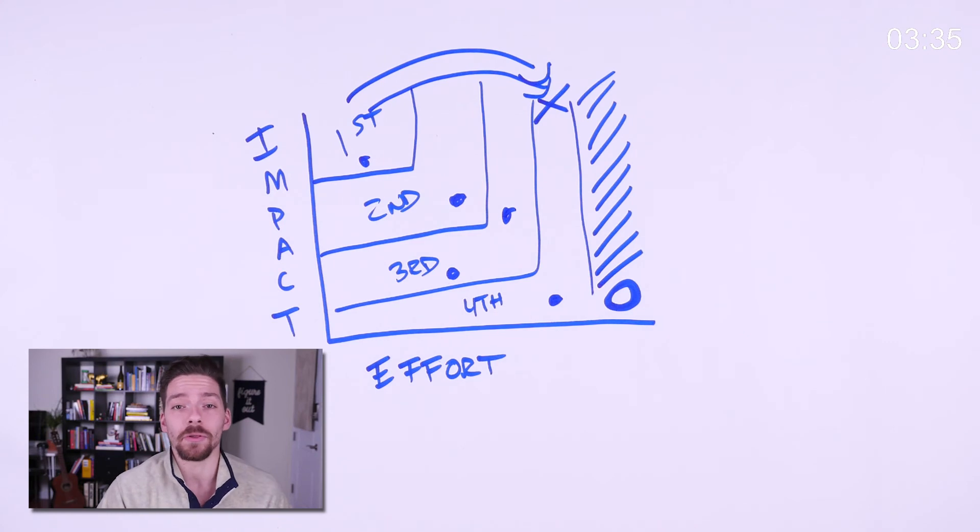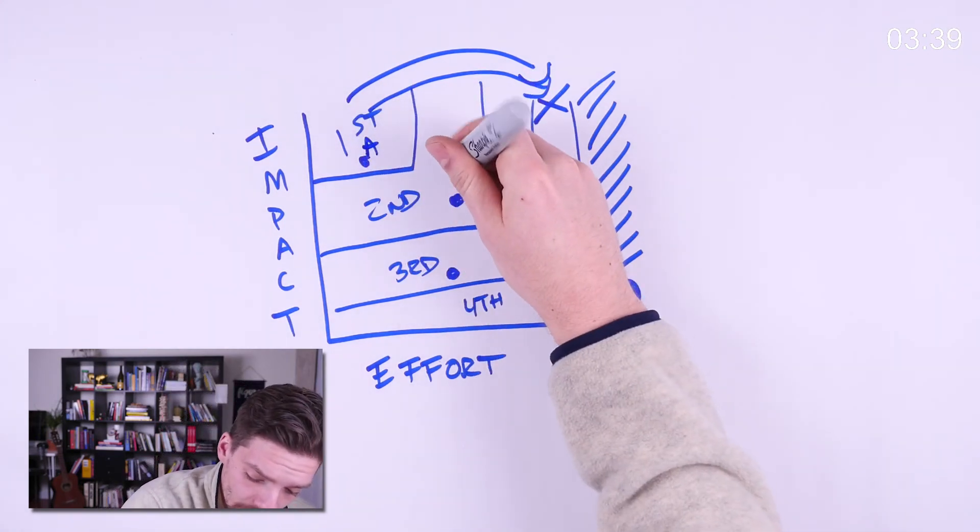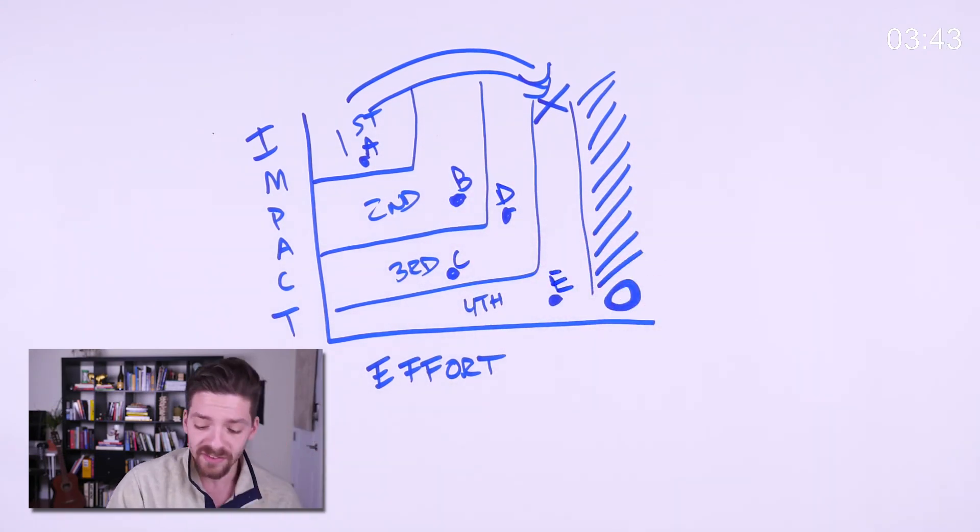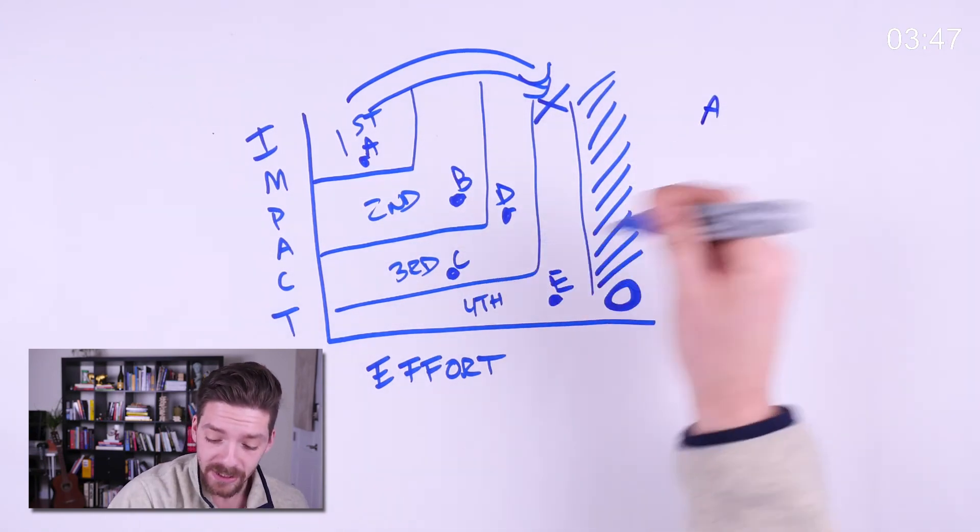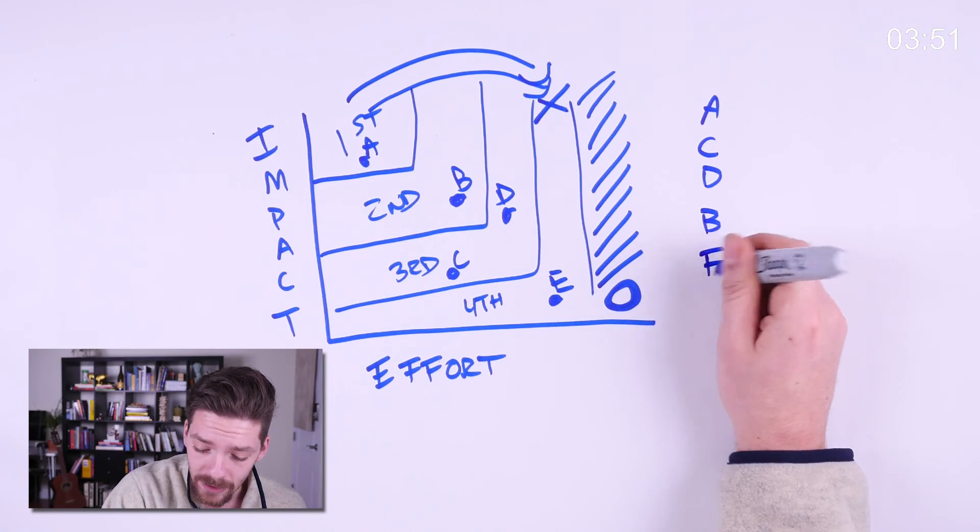And this will help you to start thinking about prioritization. Because now, let's say this is A, B, C, D, and E. You can consider doing maybe A first, and then potentially doing C, D, B, and then maybe even later on E. Or maybe you don't ever do E.